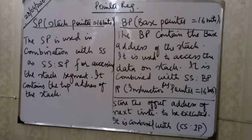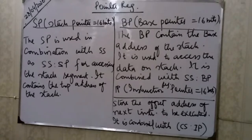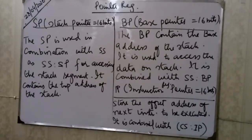The third pointer register is the instruction pointer, IP. This is a system register that stores the offset address of the next instruction to be executed. It works with the code segment register. Together, the code segment and instruction pointer form the address of the next instruction. These are all the pointer registers.